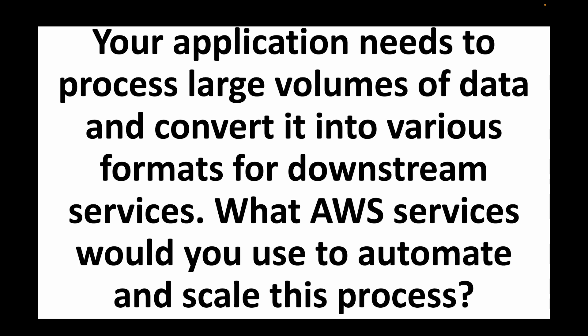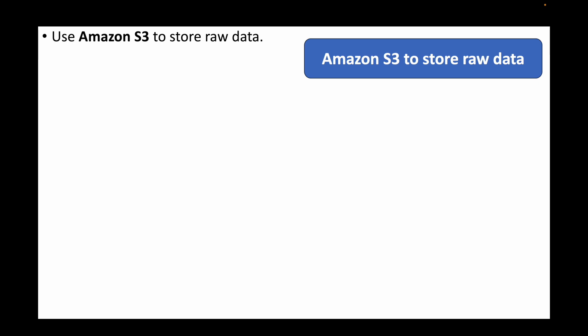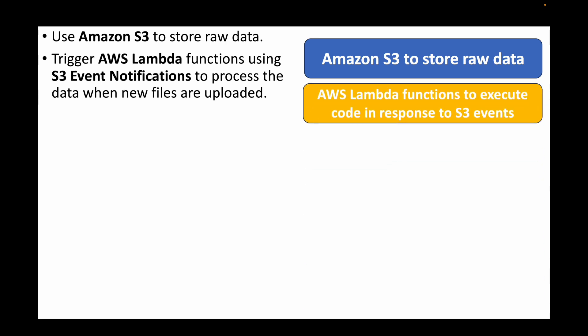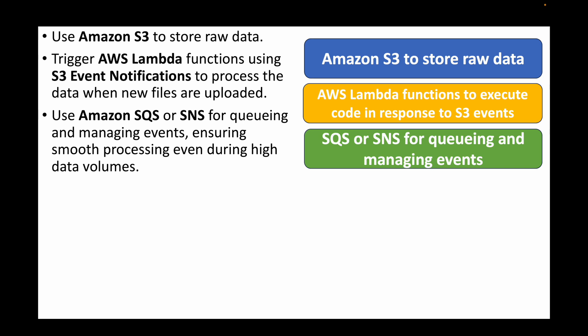The next question is: your application needs to process large volumes of data and convert it into various formats for downstream services — what services would you use to automate and scale this process? We can use S3 to store raw data, and then trigger a Lambda function using S3 event notifications whenever new files are uploaded.